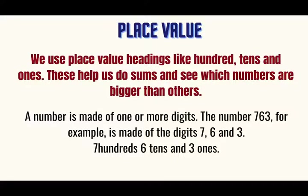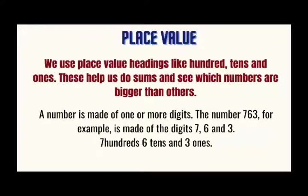Place Value. We use place value headings like hundreds, tens, and ones. These help us do sums and see which numbers are bigger than others. Example: A number is made of one or more digits. The number 763, for example, is made of the digits 7, 6, and 3. 7 hundreds, 6 tens, and 3 ones.